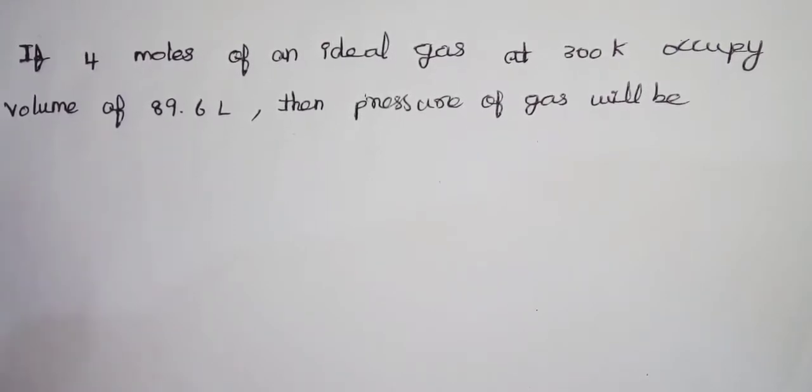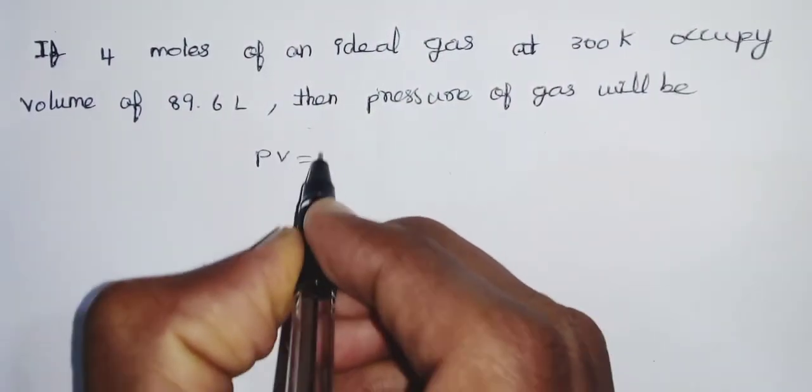For an ideal gas, we use the ideal gas equation formula: PV is equal to nRT.